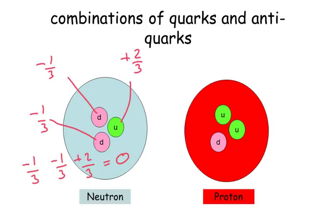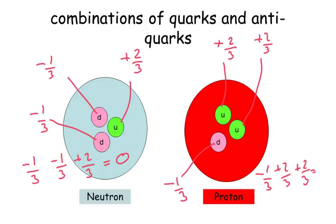Whereas with a proton, a proton's got a combination of one down, so that's minus a third, but two up quarks, so plus two thirds and another plus two thirds. So if I add these together, minus a third, plus two over three, plus two over three, equals plus one. So a proton has got a positive charge.